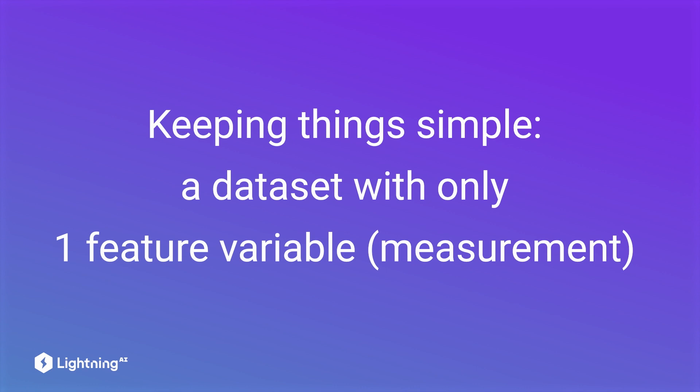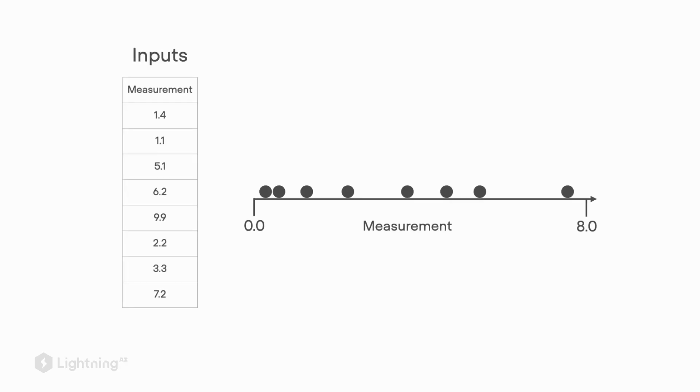To keep things simple, let's start with a dataset that only consists of one feature variable or measurement. So here on the right-hand side, we see different data points projected onto this measurement or feature variable. And the goal here is to classify which class these points belong to.